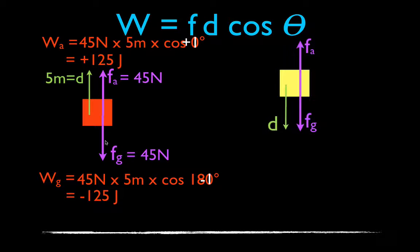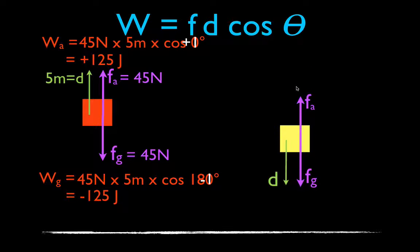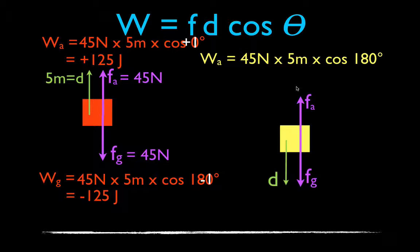Now let's try the opposite situation — what about when we lower something? The distance is the same, the forces are the same: 45 newtons, 5 meters. When you lower something, you apply a force equal to the weight of the object, and it's not accelerating. In this case, the angle between the applied force and the displacement is 180 degrees. The cosine of 180 is minus 1, so the applied force does minus 225 joules of work.